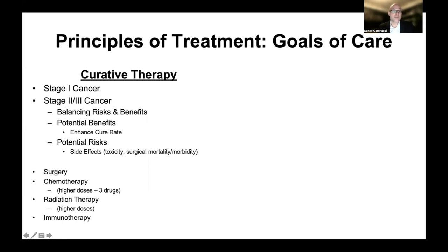Whenever we're doing anything — whether surgery, chemotherapy, radiation therapy, or other — there are known potential side effects, which we call toxicity. Even with surgery there is a known, albeit low, risk of mortality and morbidity. In the curative setting, where we know we can enhance cure rates, we balance that with potential side effects. Higher doses and more chemotherapy drugs together, as well as higher doses and longer duration radiation therapy, can enhance cure rates. There is a trade-off with increased side effects, but it is justified because we are enhancing cure rates.